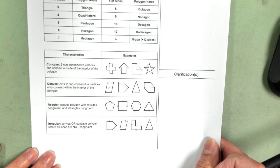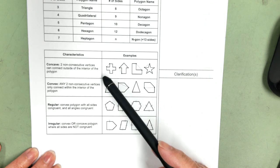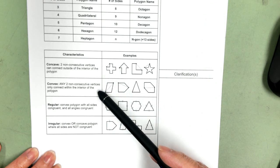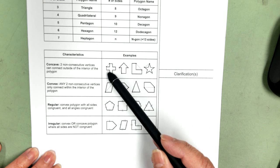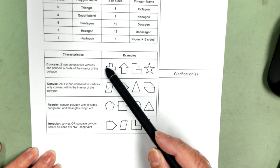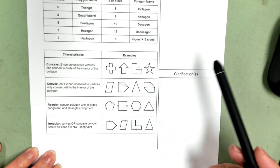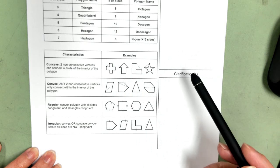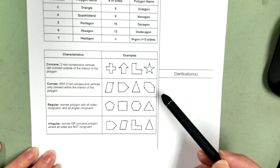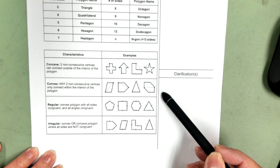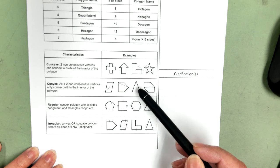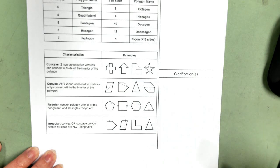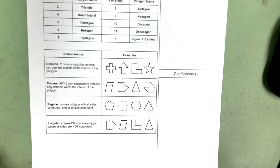This bottom table shows different characteristics. Your polygon can be concave or convex. Concave means if you pick any two non-consecutive vertices and connect them, a line will form outside of the interior or on the exterior of the polygon. Convex, you can pick any two non-consecutive vertices and when you connect them, those line segments will always be in the interior. This one is convex because you can't have a line that goes outside.